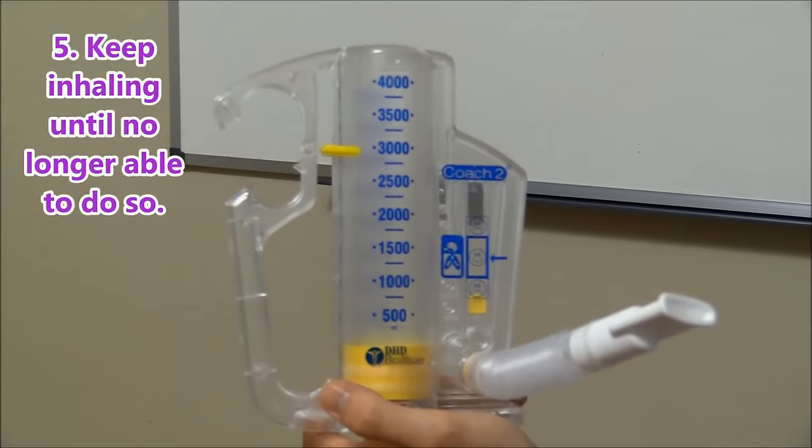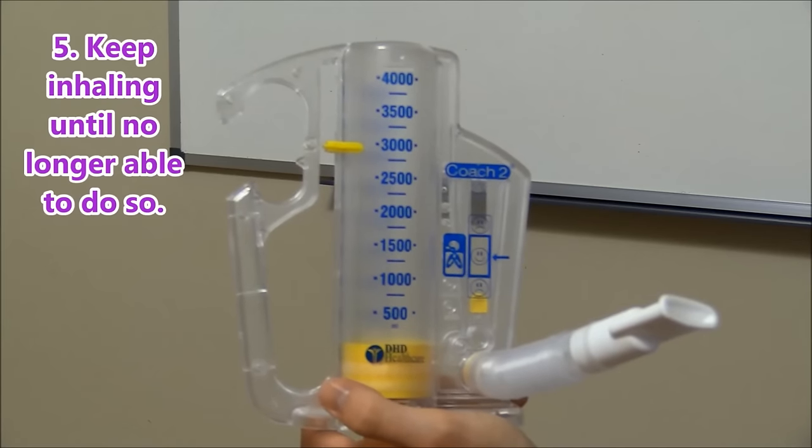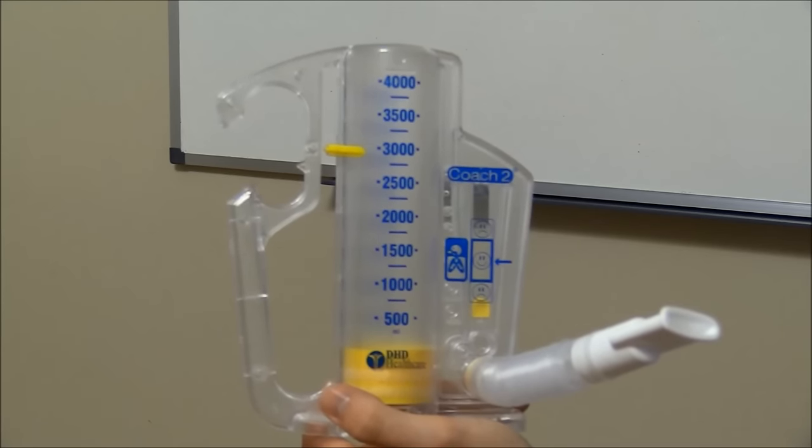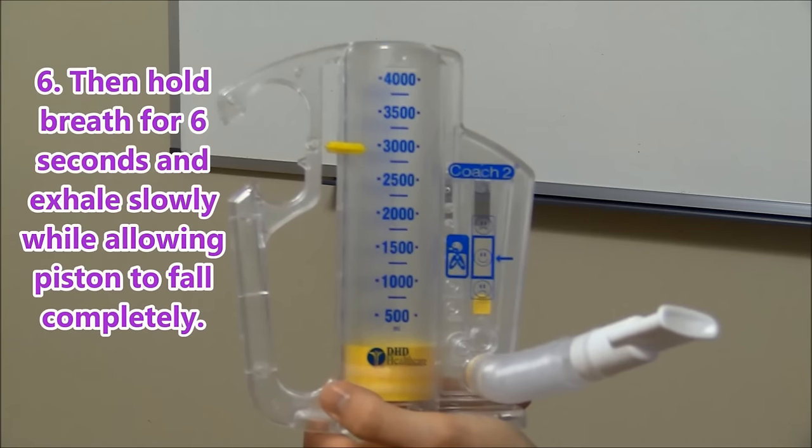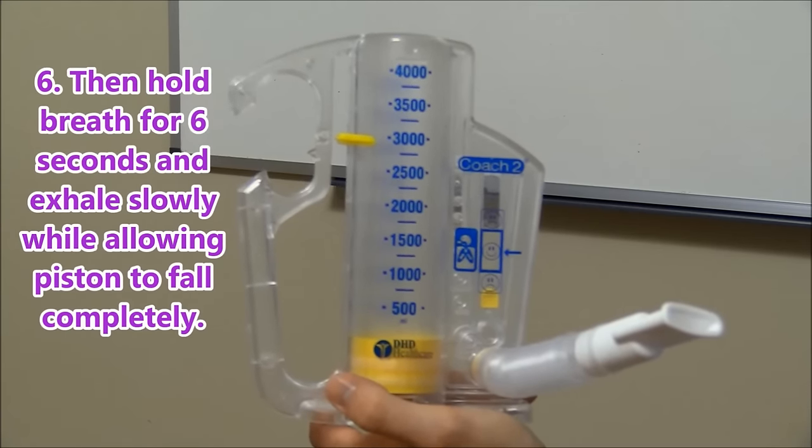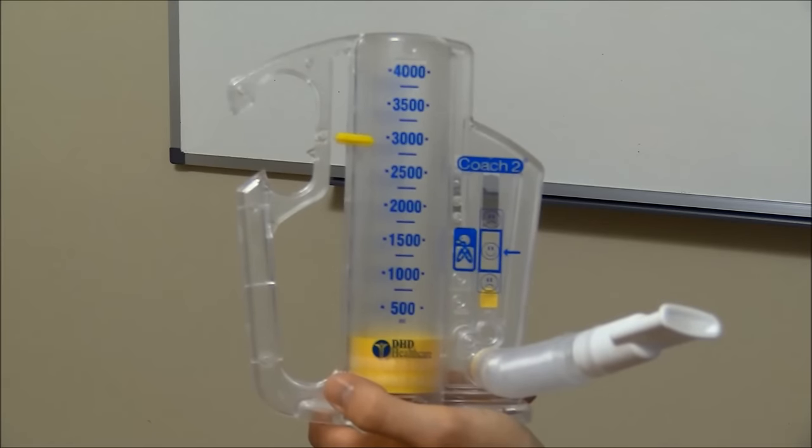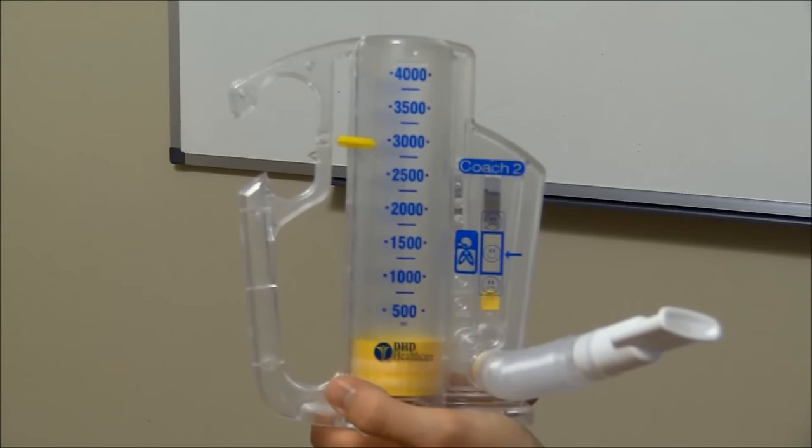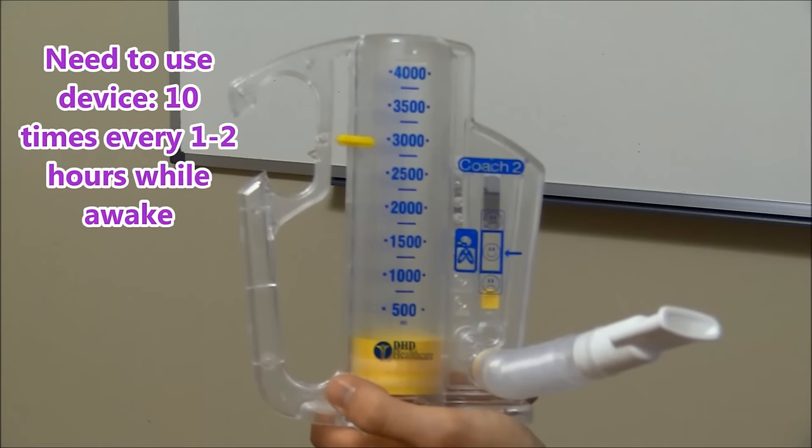Have the patient keep inhaling as deep as possible until they can't inhale anymore. And then they'll need to hold their breath for six seconds and then exhale slowly and allow the piston to fall before repeating again. And record the amount that they were able to get on the incentive spirometer.